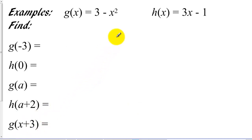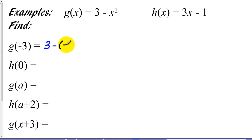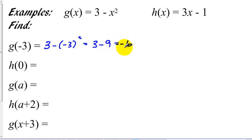Let's use some examples. g of negative 3 means plug negative 3 into the x in the g function — the letters tell you which definition to use, and then calculate. When we put a negative number in for x we put it in parentheses. So we've got 3 minus negative 3 squared, which is 3 minus 9, giving us negative 6. For the h function, we've got 3 times 0 minus 1; 3 times 0 is 0, so we get negative 1.